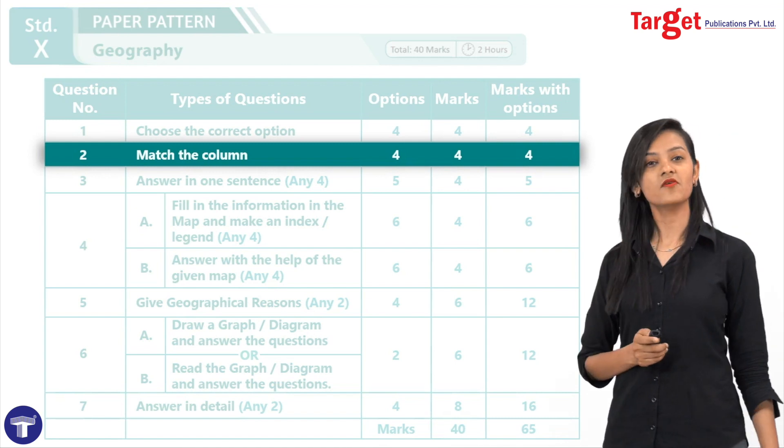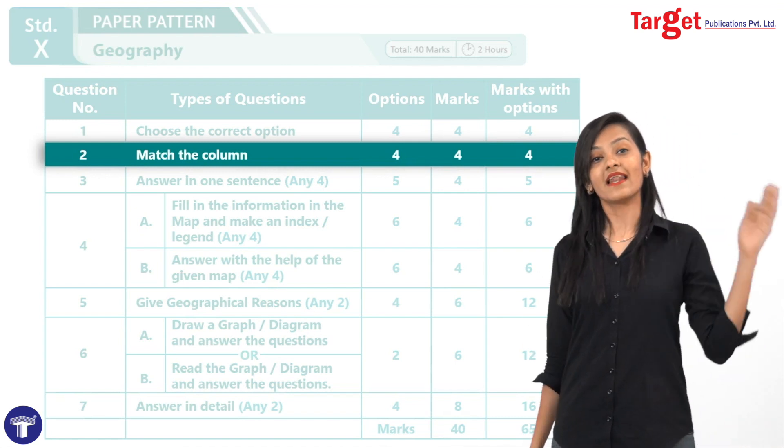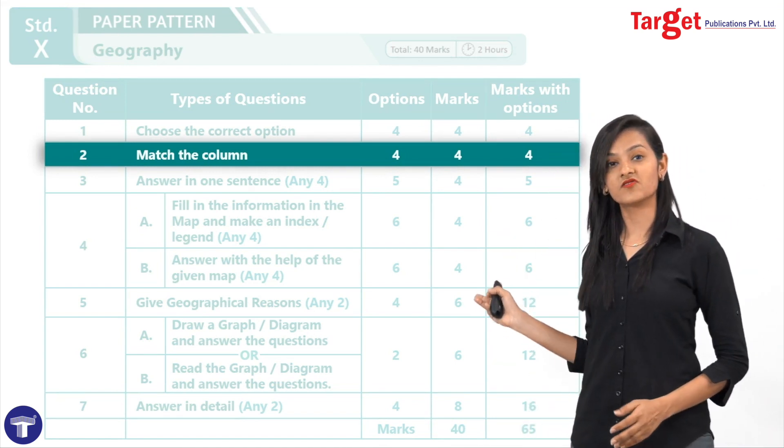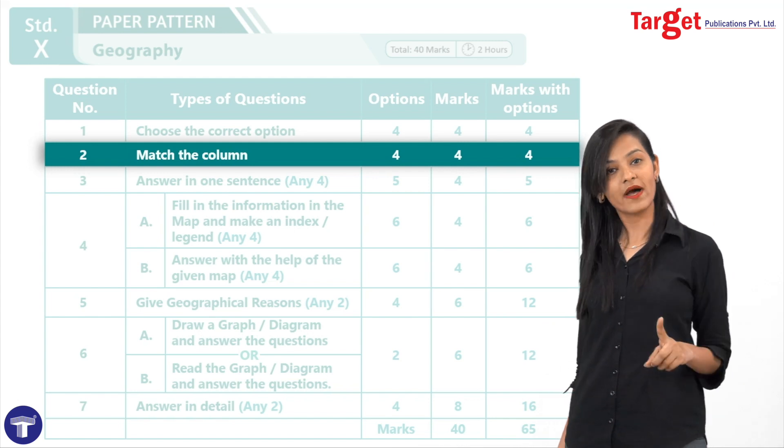Next is question number two, match the columns. Again, like question number one, here also there will be four questions for one mark each, a total of four marks.